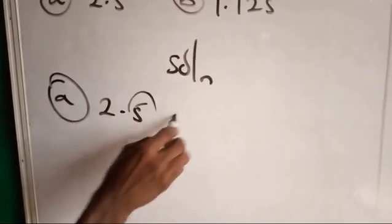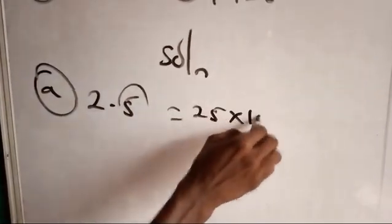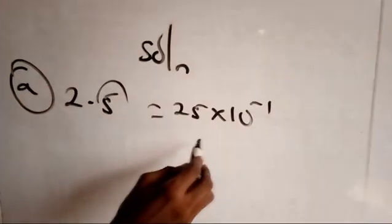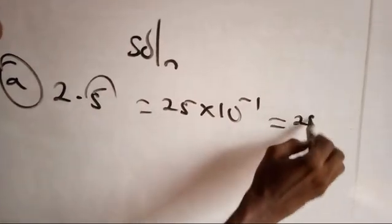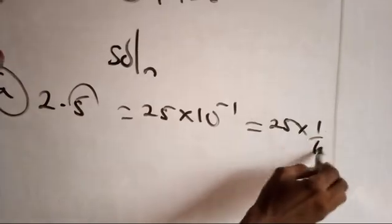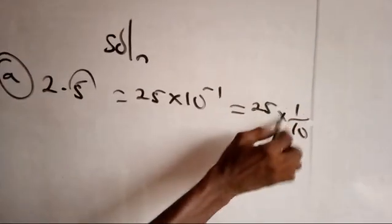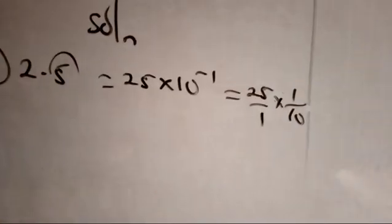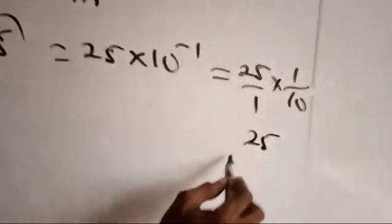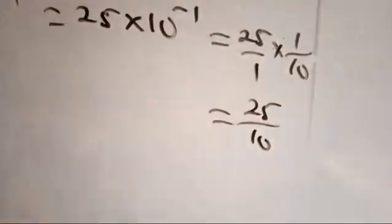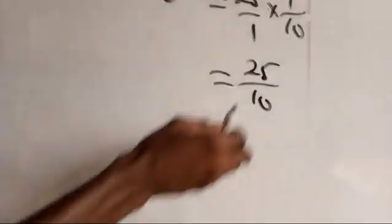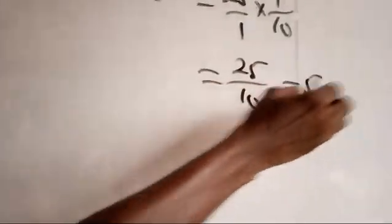I will move this one one place because 2.5 times 10 to the minus 1, and at the end we are going to be having 25 over 10. Now I think you can reduce this, 5 goes into 25 that's 5, 5 goes into 10 that's 2.